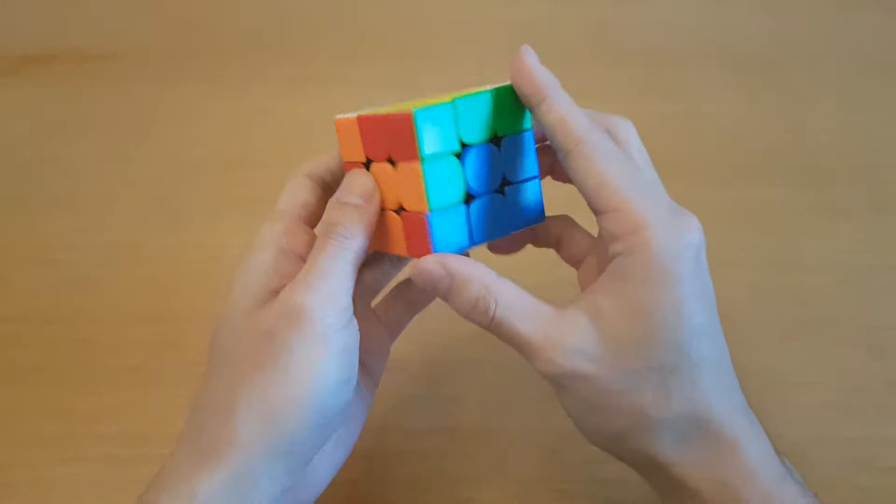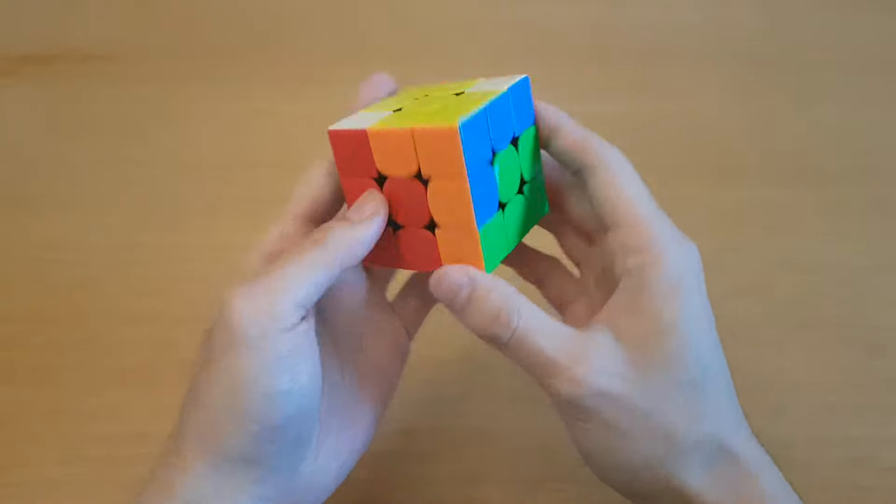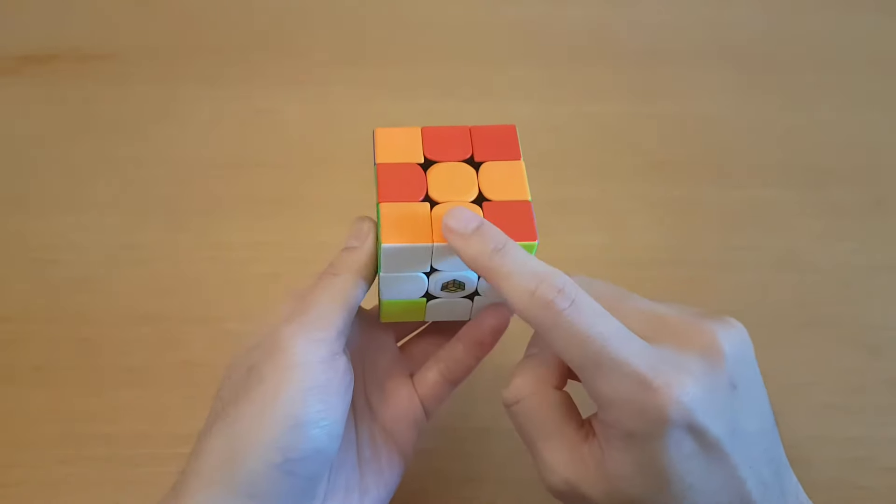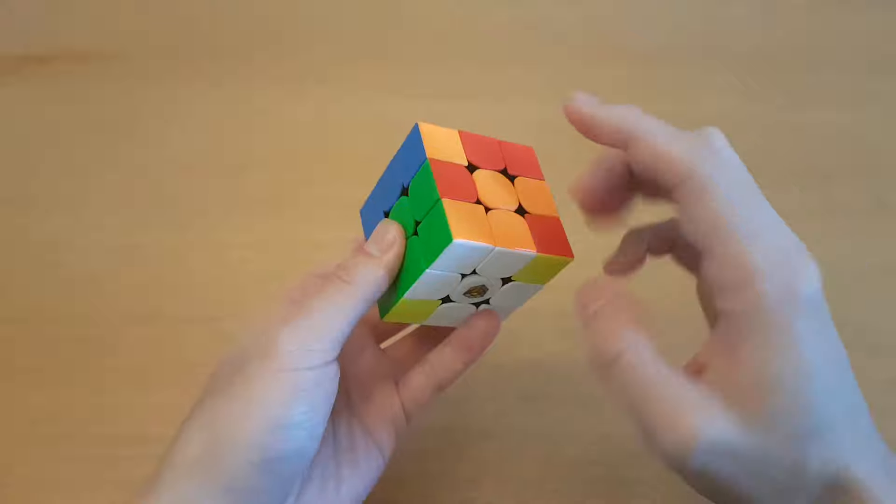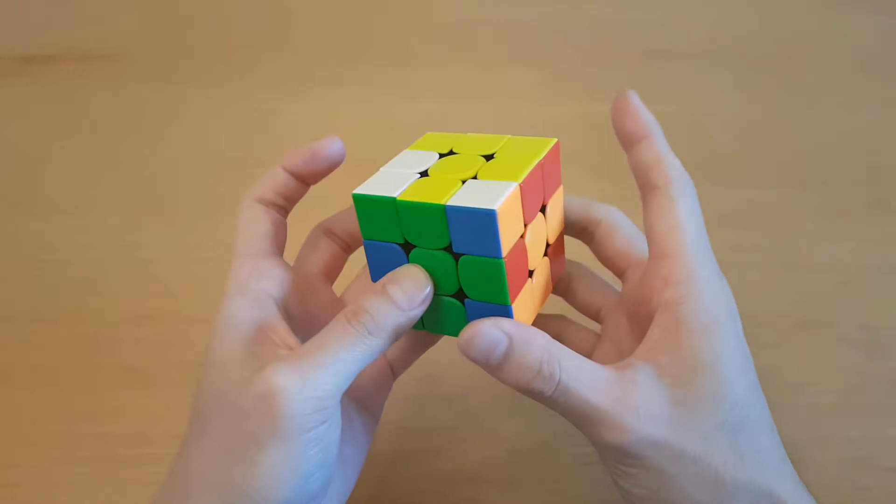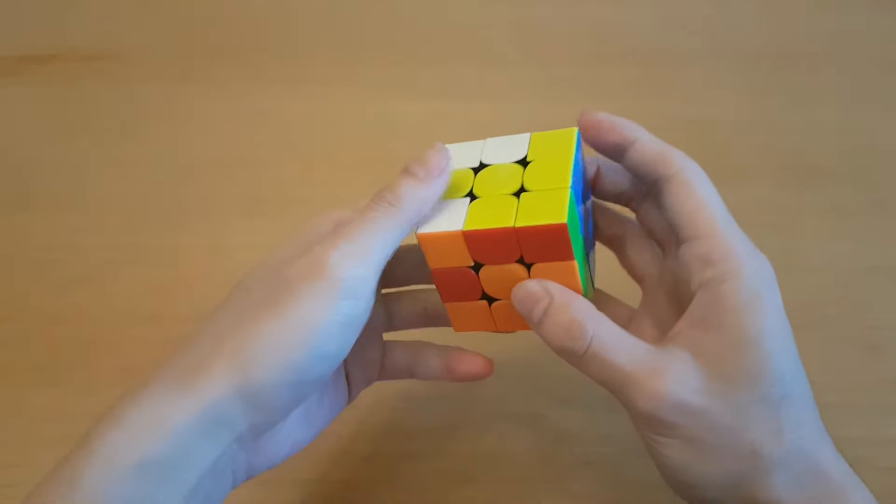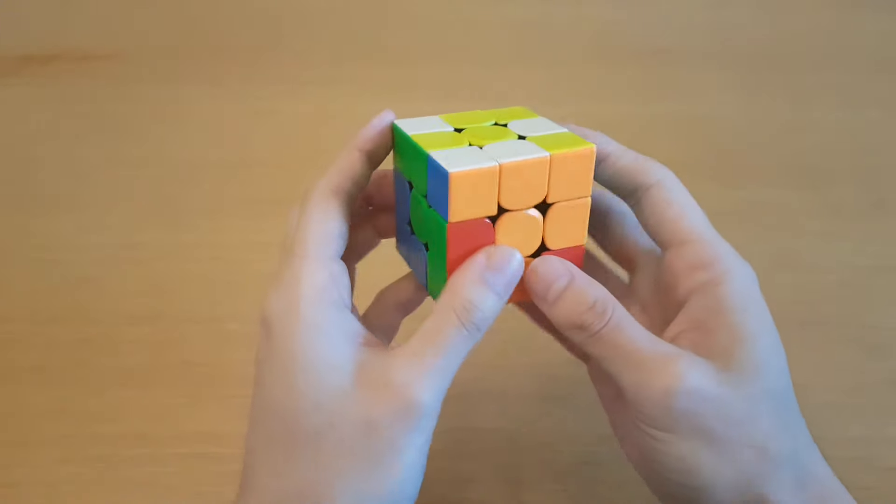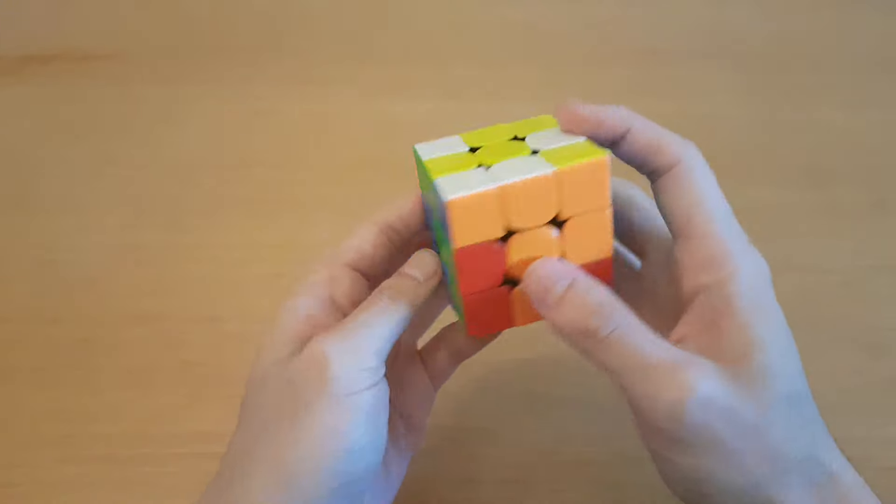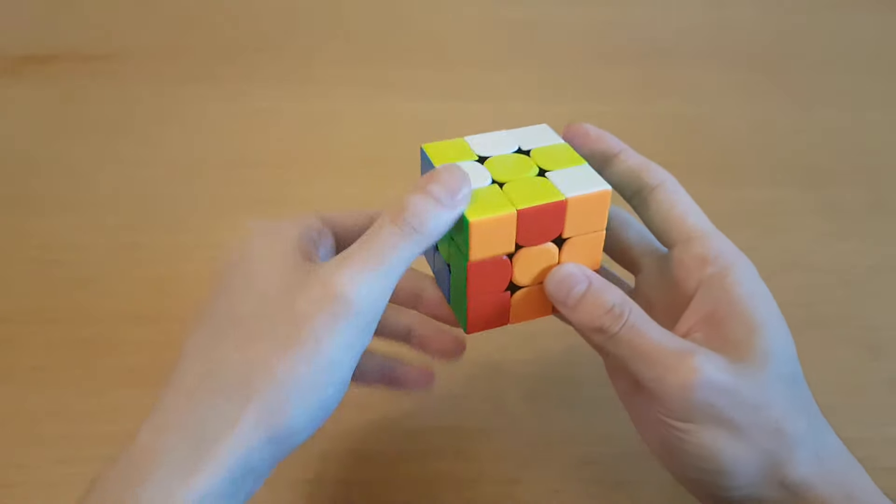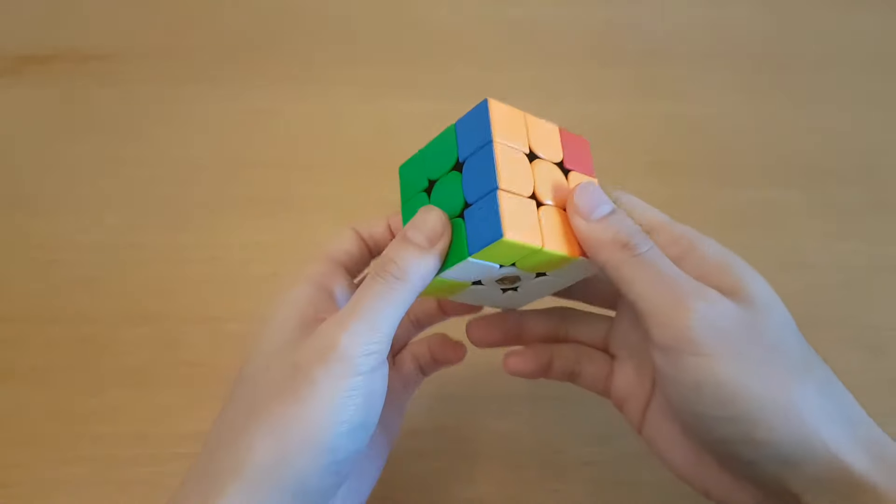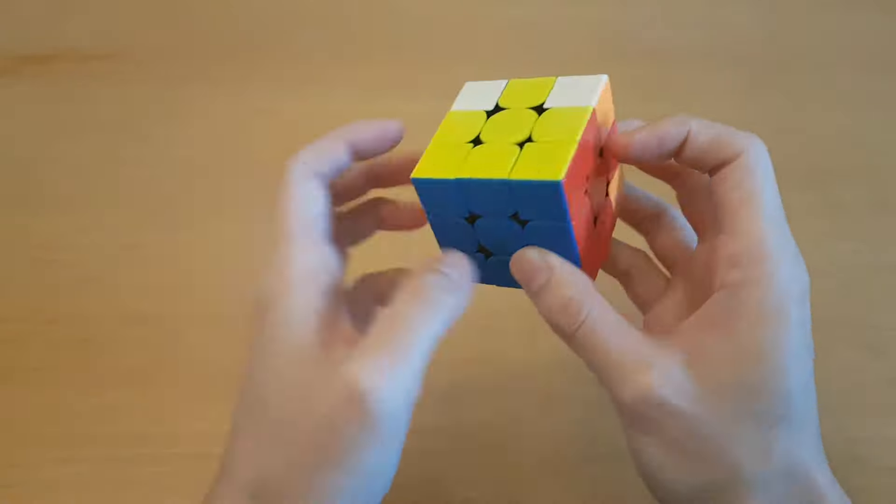Then I need the red-blue solved, so I can put these all together here. Alright, then I would just continue block building, I guess. Okay, so I want this corner and this edge together, so I can take the edge out like that, and then pair these two up like this. Alright, then I need the orange-blue here, so move this one out of the way, get this one here, put this back, and now I got this block.